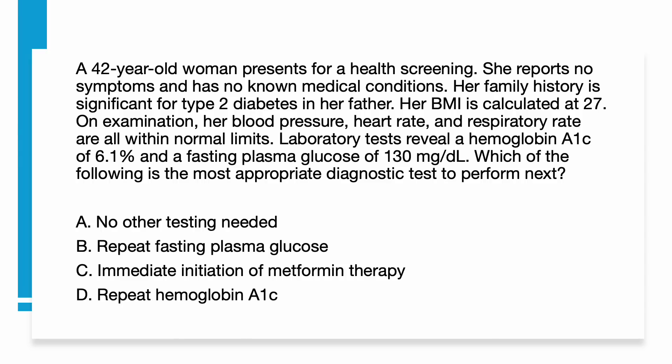A 42-year-old woman presents for health screening. She reports no symptoms and has no medical conditions. Her family history is significant for type 2 diabetes in her father. Her BMI is 27. On examination, her blood pressure, heart rate, and respiratory rate are all within normal limits. Lab tests reveal a hemoglobin A1c of 6.1% and a fasting plasma glucose of 130. Which of the following is the most appropriate diagnostic test to perform? No other test needed, repeat fasting plasma glucose, immediate initiation of metformin therapy, or repeat hemoglobin A1c?